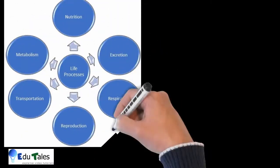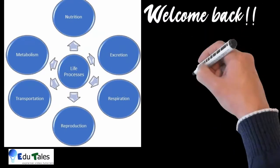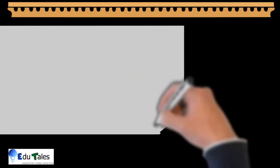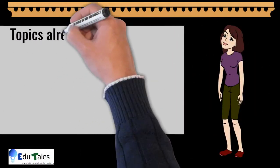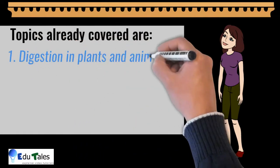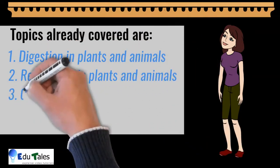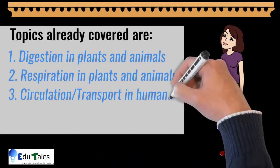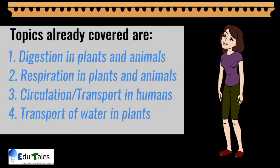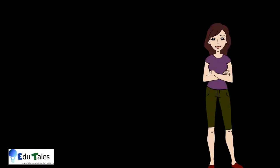Hello, welcome back. Let us start with our last video for Chapter 6: Life Processes. The topics which we have already covered up till now are digestion in plants and animals, respiration in plants and animals, circulation in humans, and transport of water in plants. For all our previous videos, please see the link in the description given below.